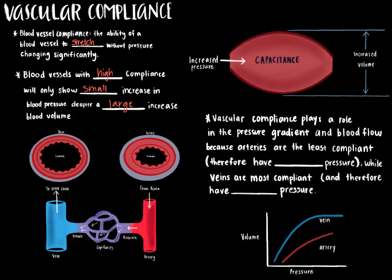Vascular compliance plays a role in the pressure gradient and blood flow because arteries are the least compliant and therefore have high pressure, while veins are the most compliant and therefore have low pressure. This ensures that the pressure gradient is maintained and blood flow continues going from high pressure to low pressure — from the heart to arteries to capillaries to veins and back to the heart. The compliance curve shows that veins have a higher compliance compared to arteries at almost any given pressure, and at low pressures the venous compliance is about 10 to 20 times greater than arterial compliance.